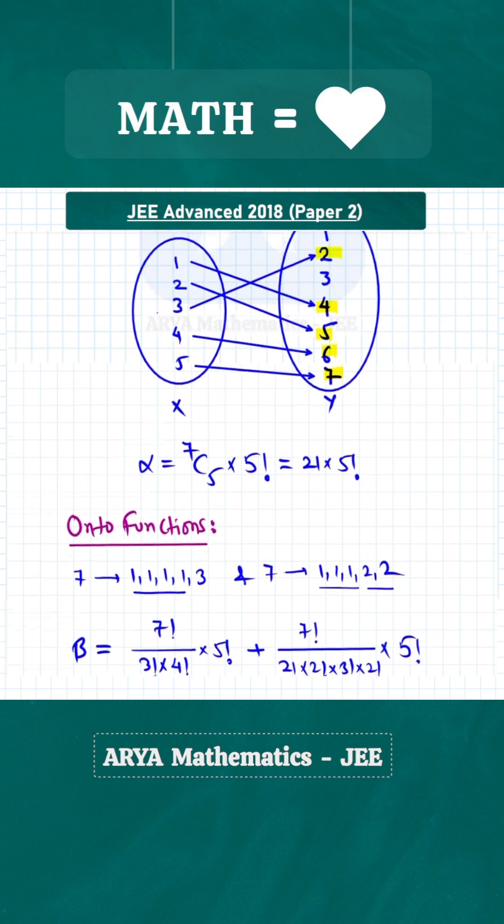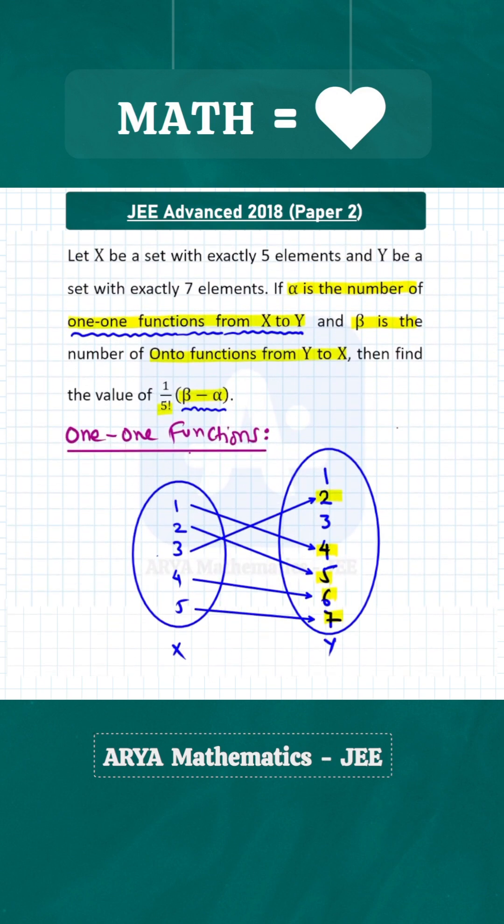Now the number of one-to-one functions is 21 × 5 factorial. After substituting those numbers, you will get the correct answer as 119.